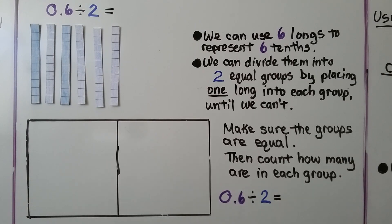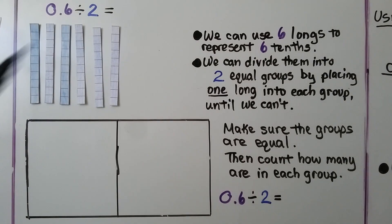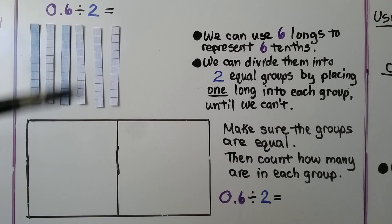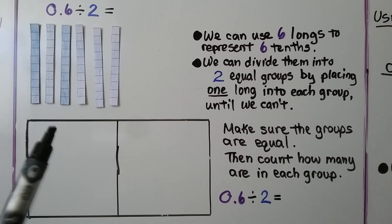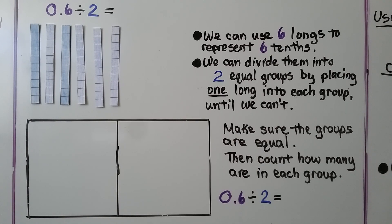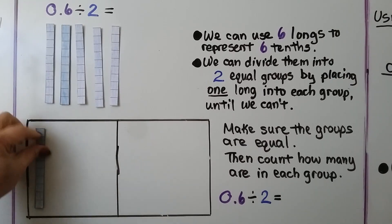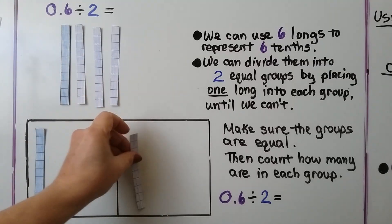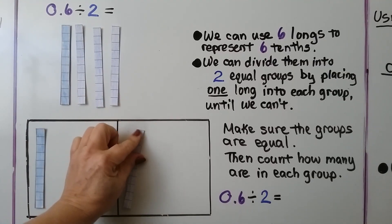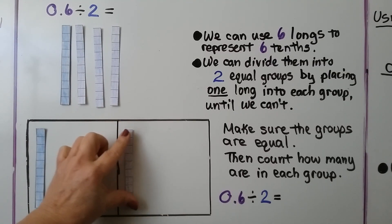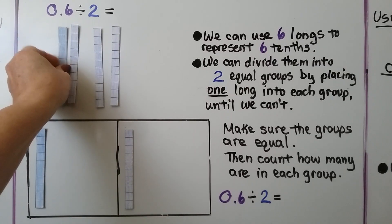Here we have six tenths divided by two. We can use six longs to represent the six tenths, and we can divide them into two equal groups by placing one long into each group until we can't. We do it one at a time — we put one into each group.